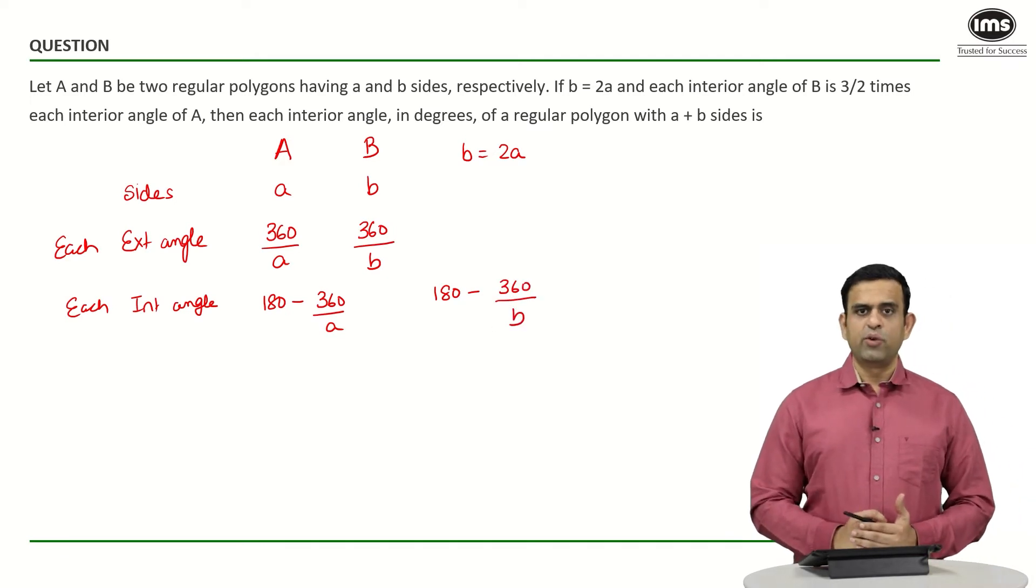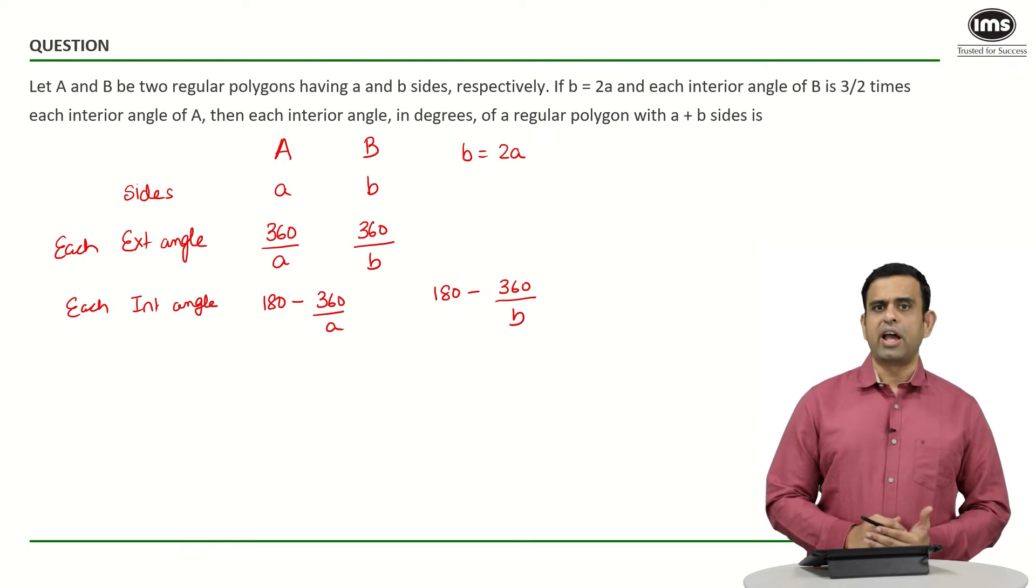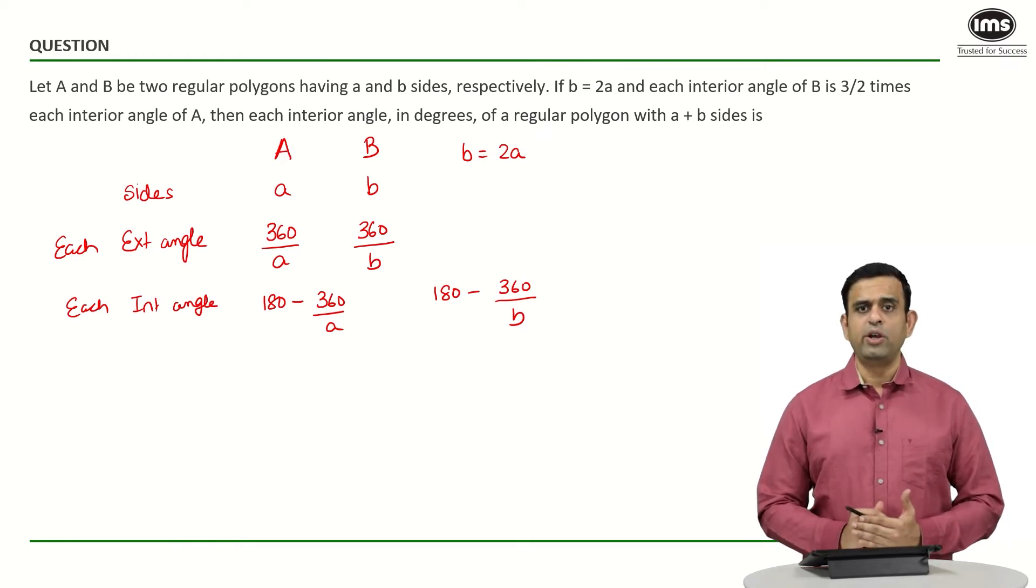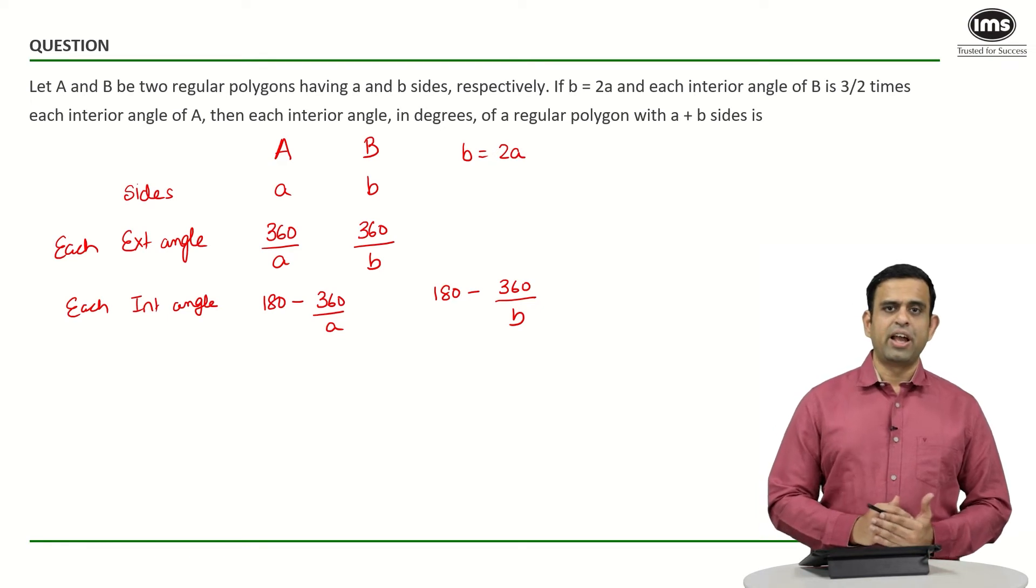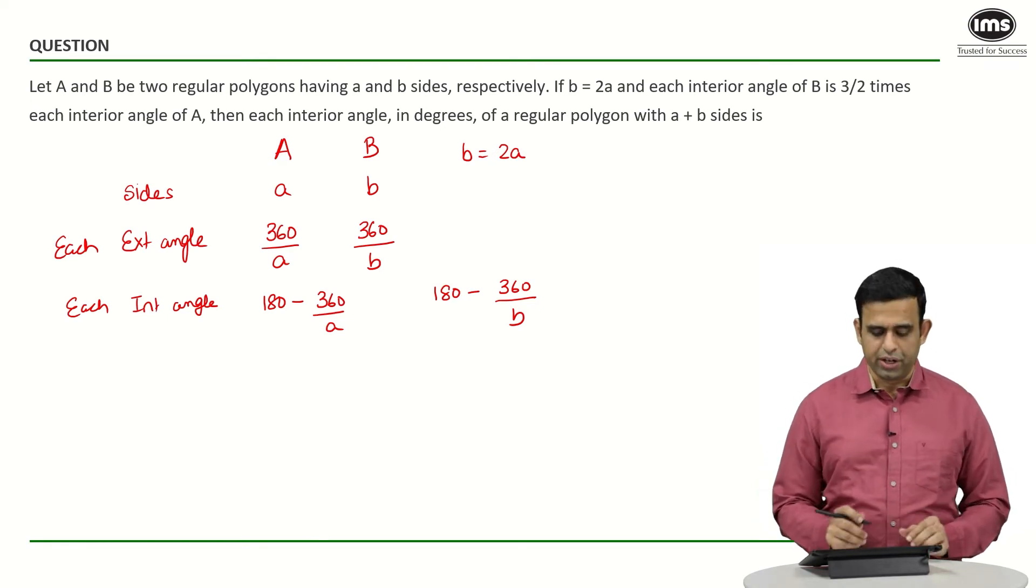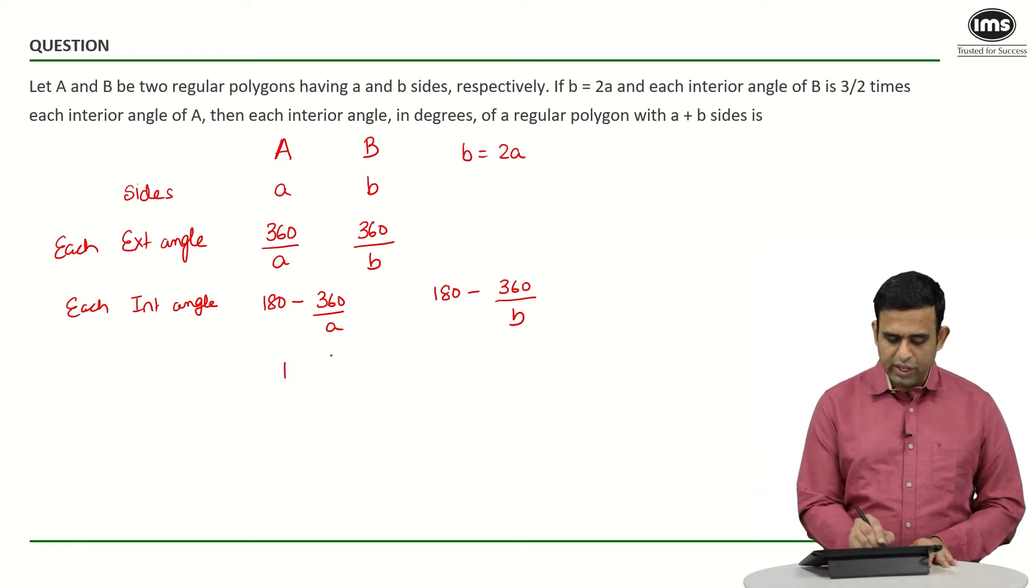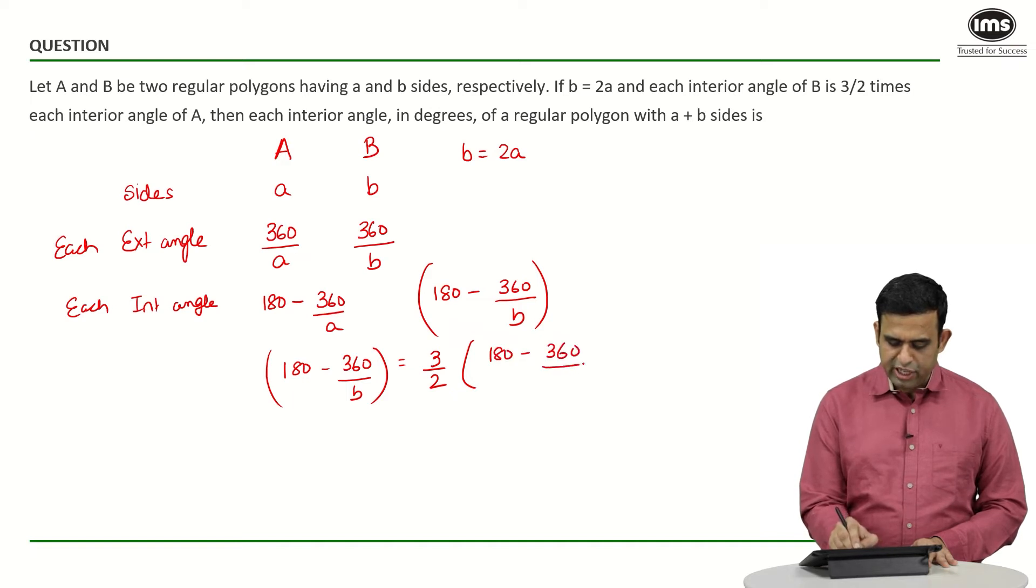What they have told you is that each interior angle of B is 3/2 times each interior angle of polygon A. That means 180 minus 360 divided by B should equal 3/2 times 180 minus 360 divided by small a.